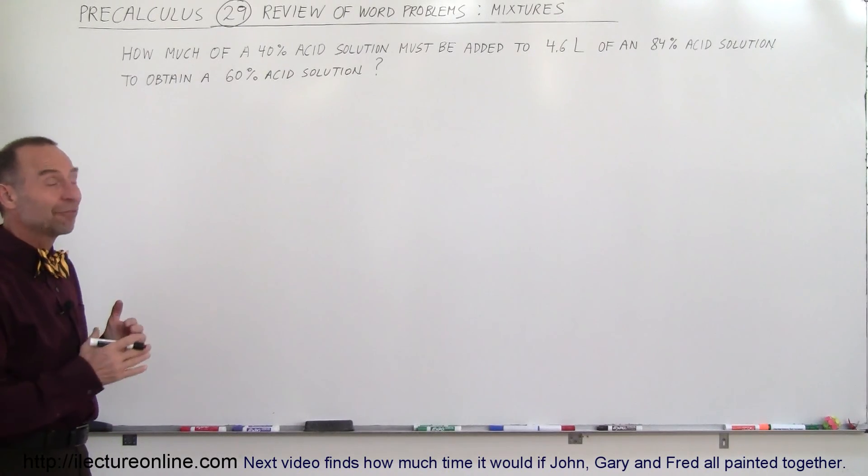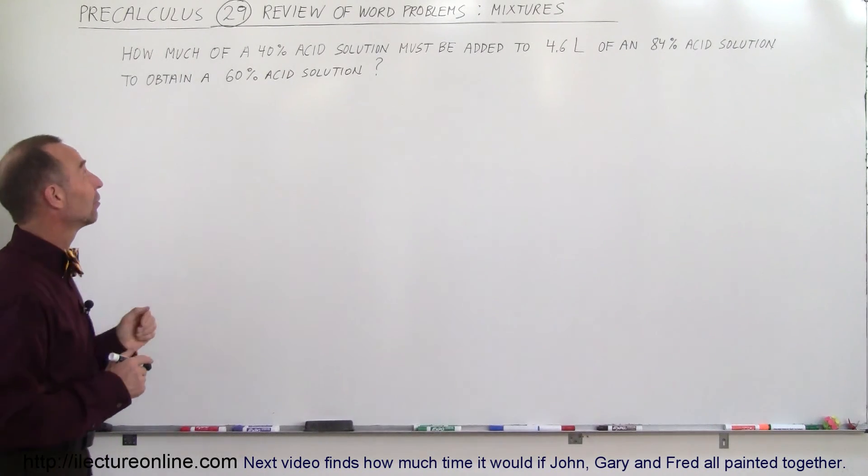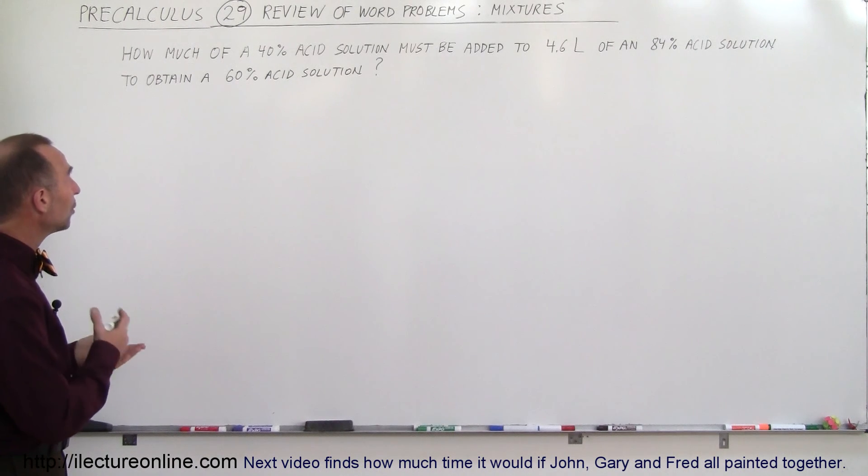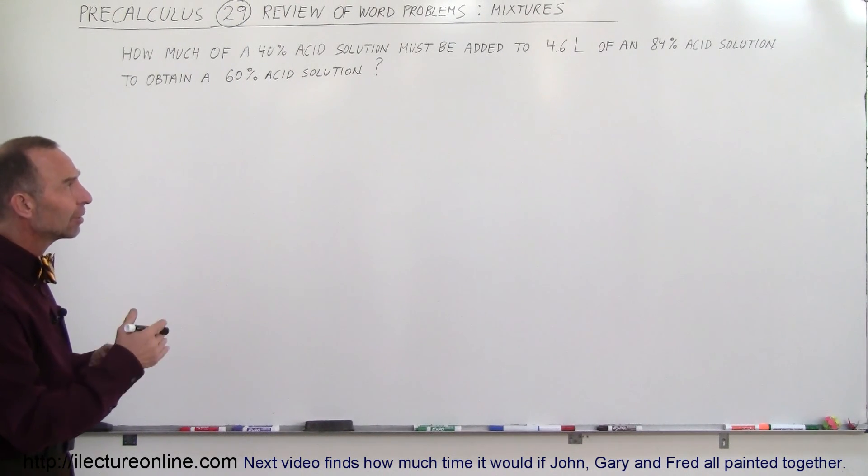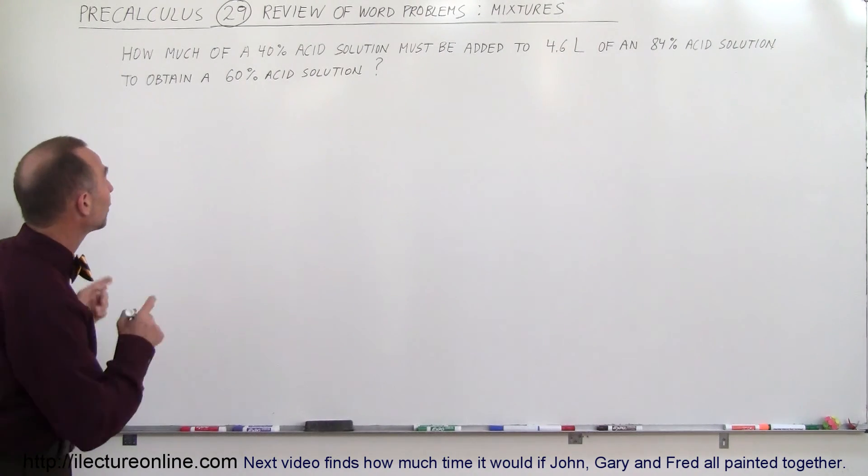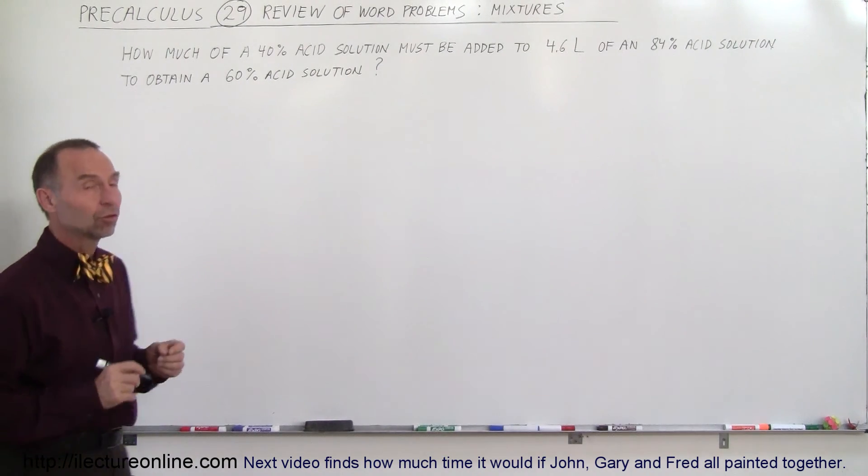Welcome to our Lecture Online and here we have a mixture problem. And so the problem reads as follows. How much of a 40% acid solution must be added to 4.6 liters of an 84% acid solution to obtain a 60% acid solution?